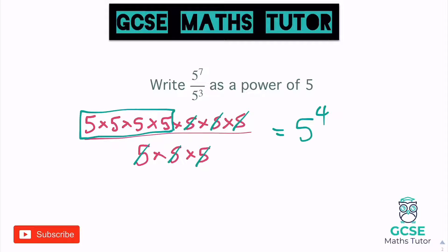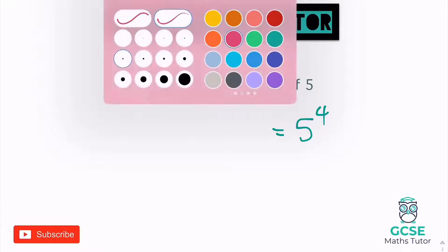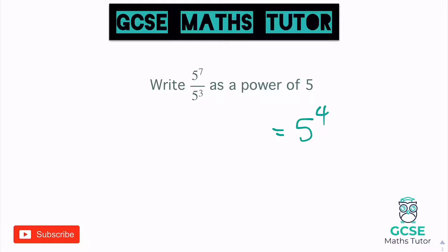So that's an explanation of why we get the answer. Let's have a look at how we get that from the numbers. We have five to the power of seven, five to the power of three, and seven take away three equals four. So when we're dividing, our little trick is we can just subtract the powers, and we get five to the power of four as our final answer.